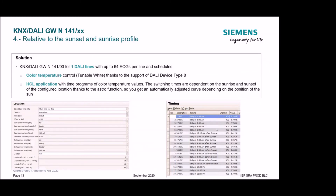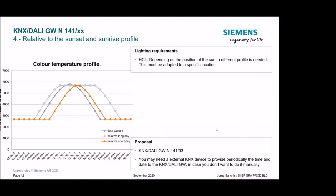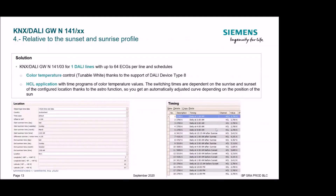The astro function allows you to tell the KNX-DALI gateway your location, and it will automatically know when sunrise and sunset occur. In the time programs, instead of fixed hours, you can say 'one hour after sunrise' or 'two hours before sunset.' In that way you have a relative curve — not a fixed curve — and you get curves relative to the position of the sun. You need to set the longitude and latitude in the KNX-DALI gateway, and then in the time programs simply select the astro function using sunrise and sunset instead of fixed hours.